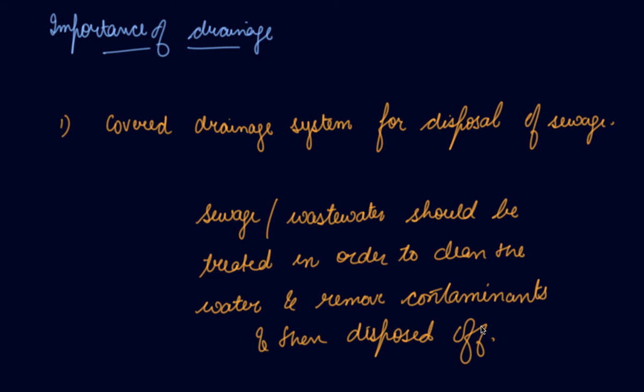The drainage system should be very proper in order to avoid diseases and to protect public health. Water should go into the sewage, travel through the pipes, be treated properly, and then only be disposed of into rivers or used in agriculture. When all the contaminated impurities are removed from the water, then only we can safely use the water.